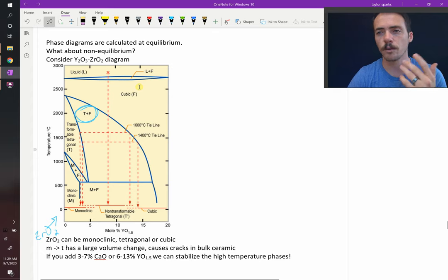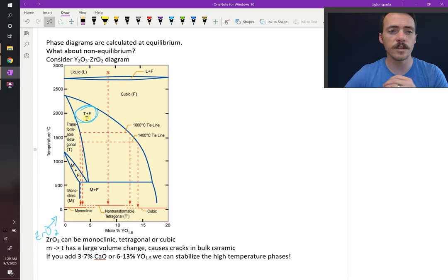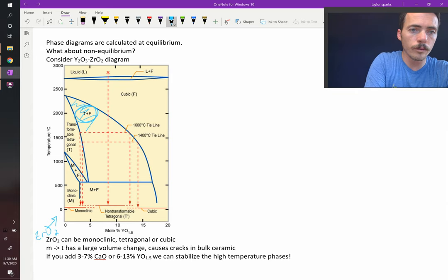F stands for the cubic. It stands for fluoride. It's a cubic phase plus your tetragonal phase. We'll talk about what those mean later. Just they're two different ways of arranging the atoms. And in this region, you've got a mixture of those two phases.